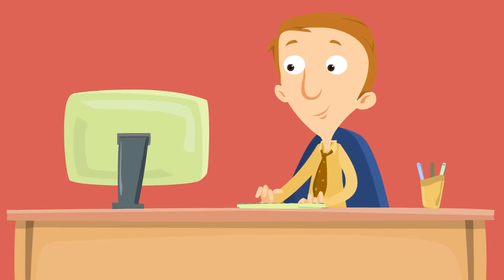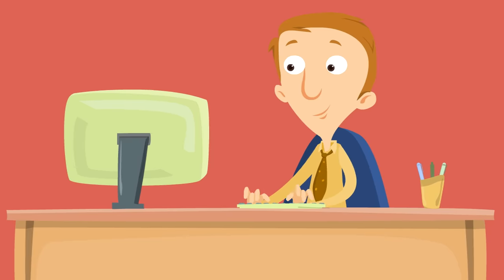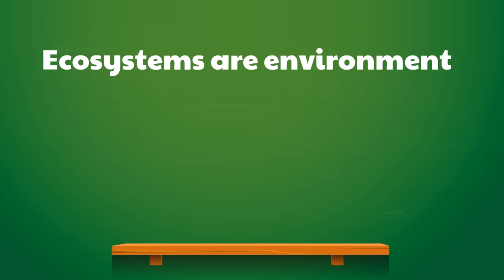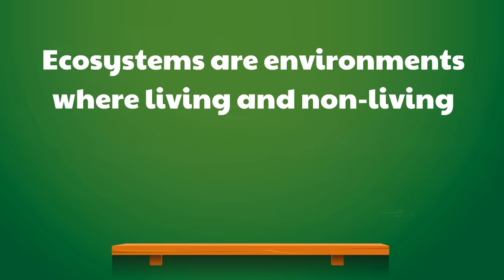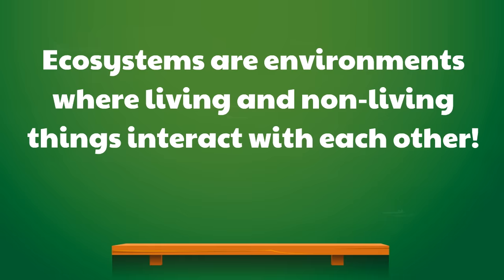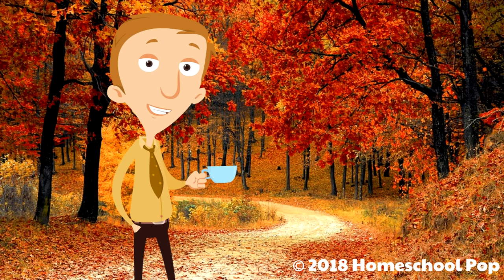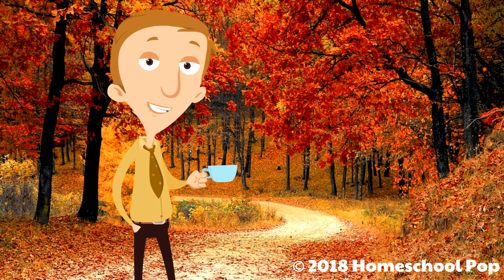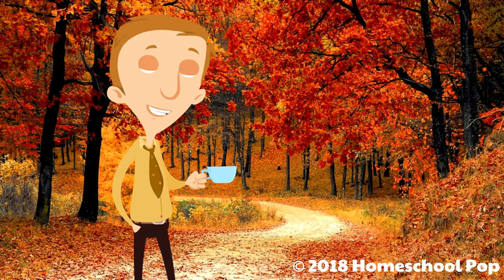Those are just a few of the ecosystems around the world — there are so many more. Some of them even exist purely in the water, but they all have this in common: ecosystems are environments where living and non-living things interact with each other. We hope you had an awesome time learning about ecosystems. What other ecosystems can you think of? Talk to a teacher, a parent, or a friend about other interesting environments where living and non-living things interact. For now, I guess I'm just going to stand here with this cup doing absolutely nothing in a temperate deciduous forest.